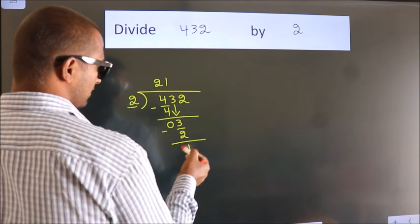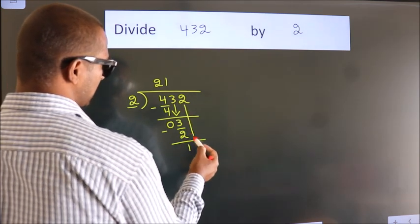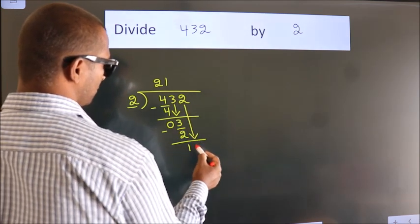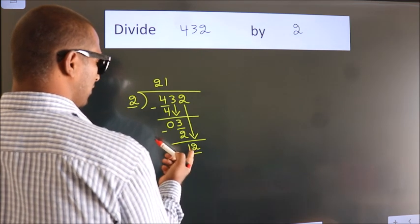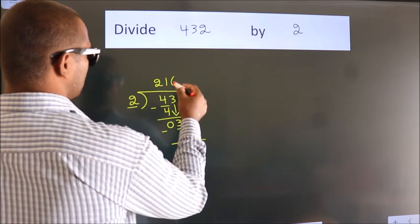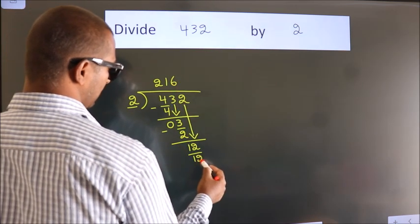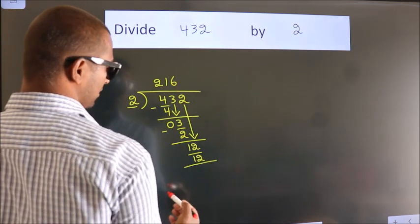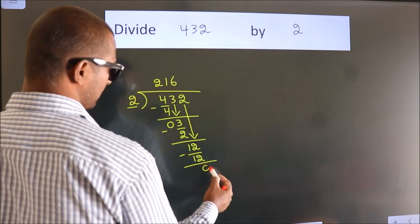After this, bring down the beside number. So 2 down. So 12. When do we get 12? In 2 table, 2 times 6 is 12. Now we subtract. We get 0.